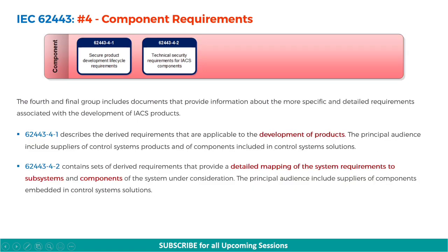The fourth and final section is Components Requirements, that is 62443.4. This group includes documents that provide information about the more specific and detailed requirements associated with the development of IACS products. 62443.4.1 describes the derived requirements applicable to the development of products, for suppliers of control systems products and components. 62443.4.2 contains sets of derived requirements providing a detailed mapping of system requirements to subsystems and components, intended for suppliers of components embedded in control systems solutions.